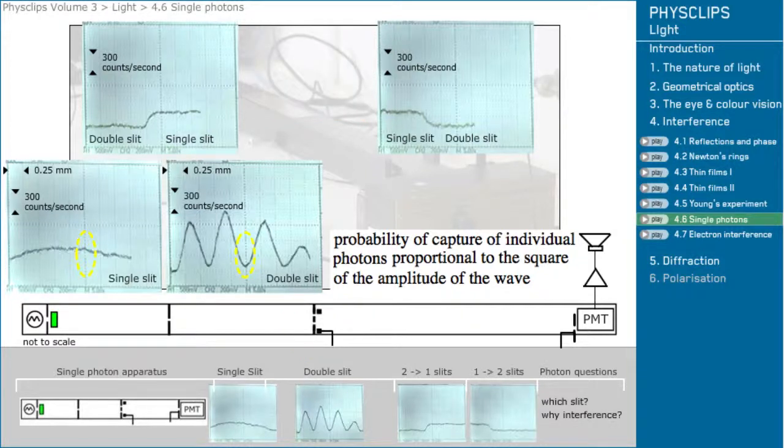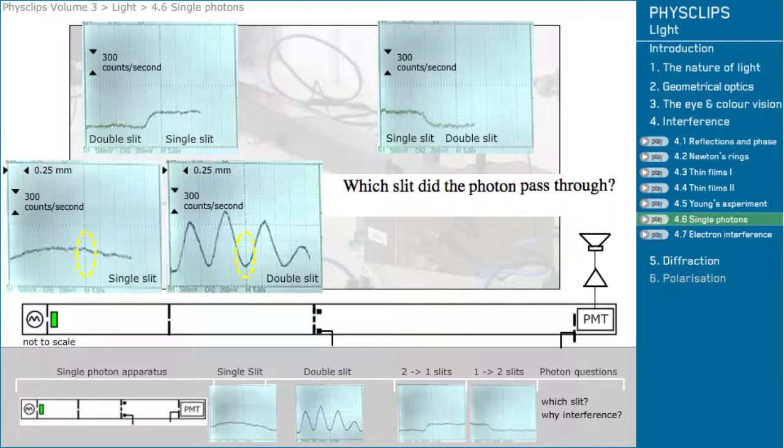Now think about an individual photon whose capture gave one of the clicks we heard. This invites a range of questions such as, which slit did the photon pass through? And, if it went through one slit, why didn't it give the single slit pattern?